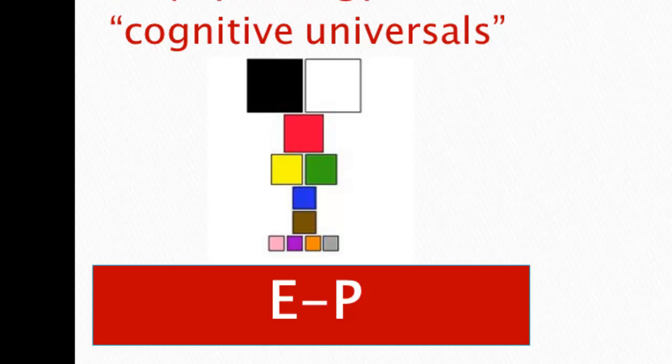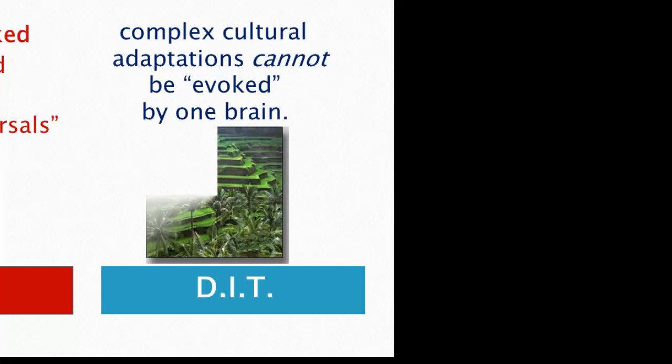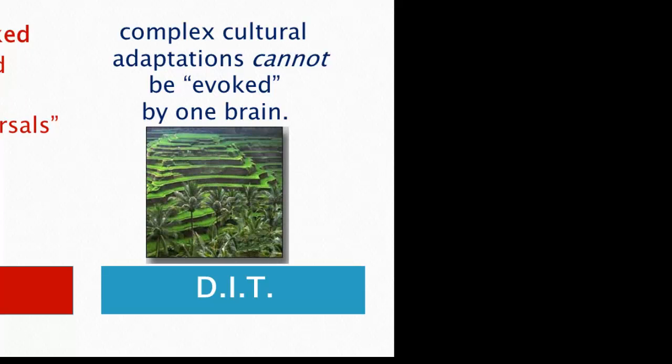Dual inheritance theorists argue that complex cultural adaptations are patterns of cultural knowledge that cannot be evoked by one brain. An example you'll watch a film about is Balinese rice terraces and the whole complex that goes with them, including a system of water temples. This is something built through the thinking of multitudes of people — if it suddenly disappeared, it would be unlikely to be evoked by one brain.